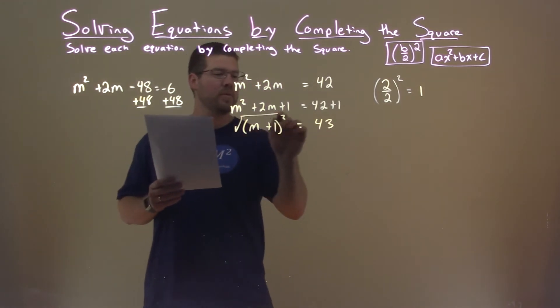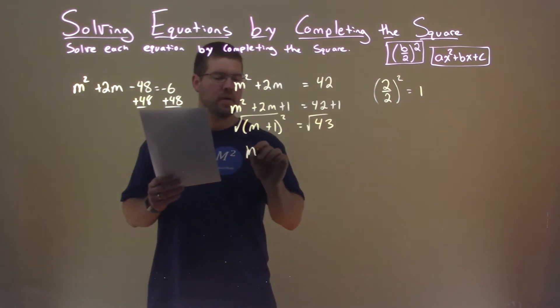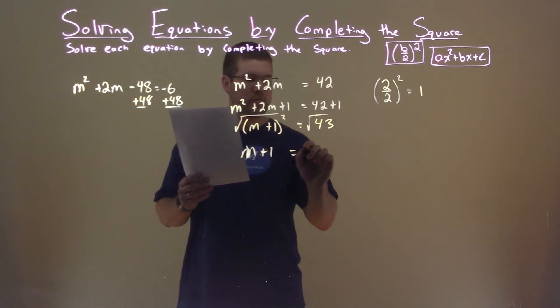I now have to take the square root of both sides of the equation. We have m plus 1 is equal to plus or minus square root of 43.